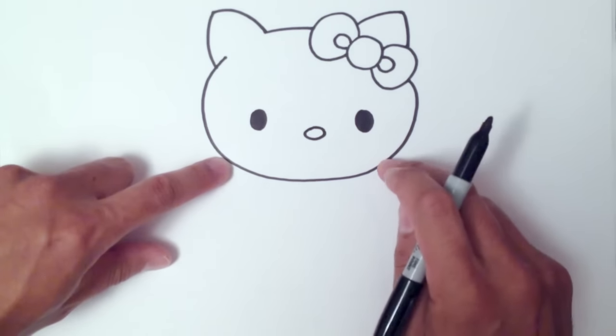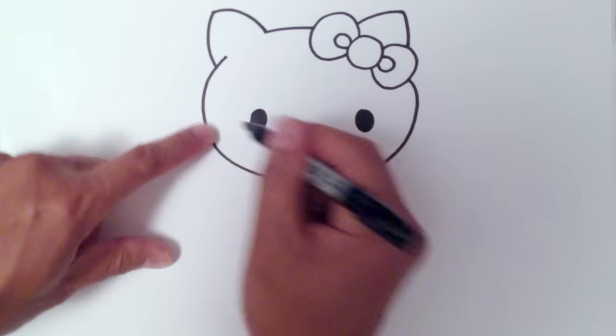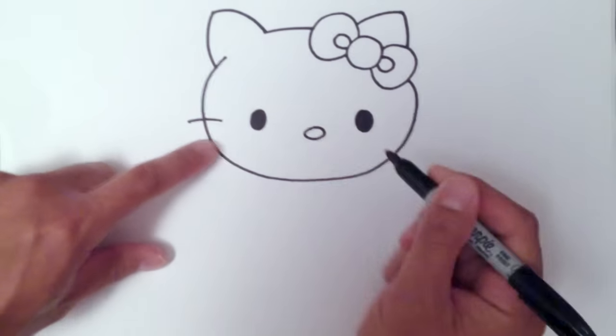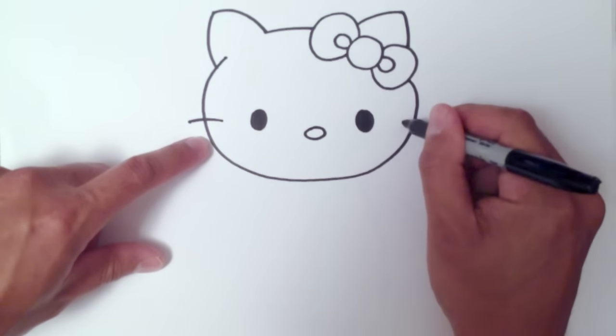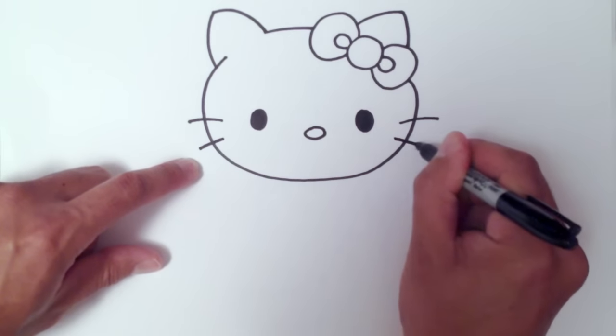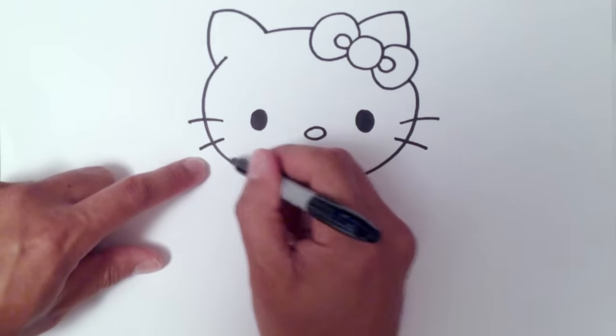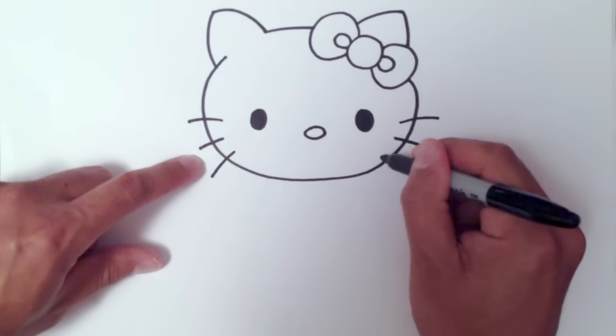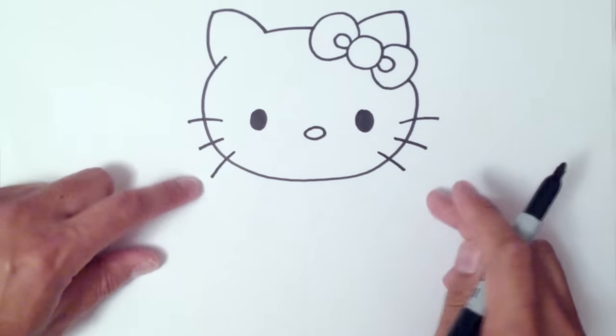Now she's got three whiskers on either side. Starting just above where this eye is and I'll do the same thing on the other side. In between, I'll come down a little shorter. The third one kind of aims downwards on both sides.